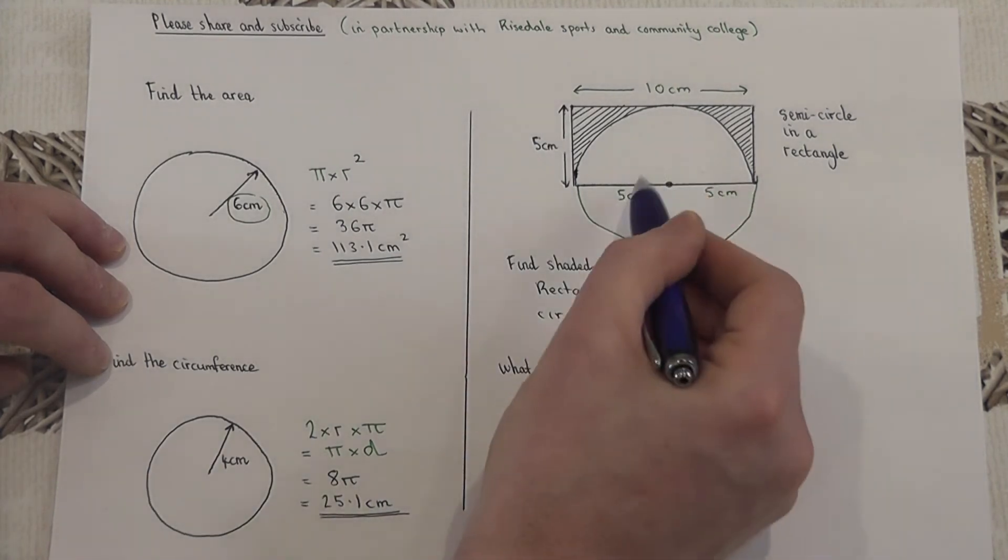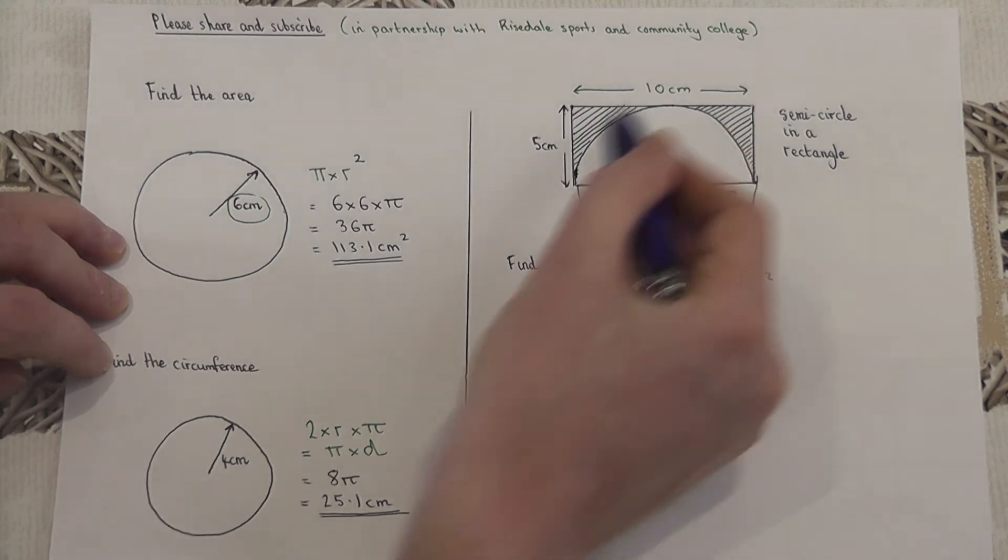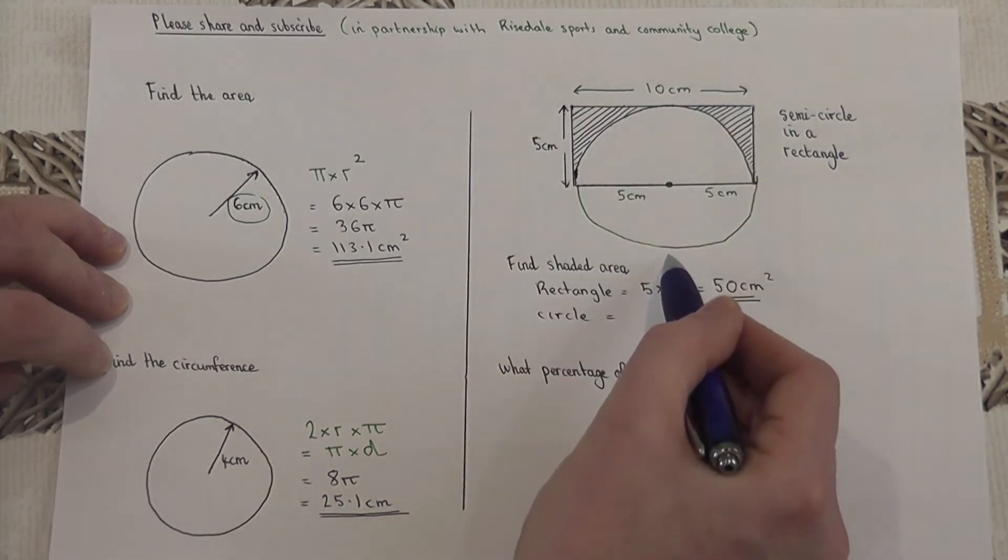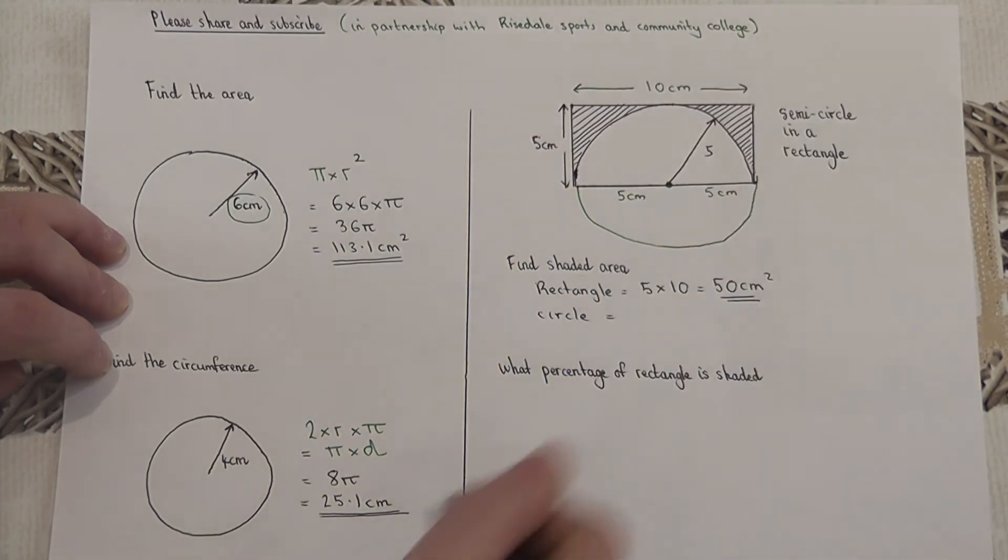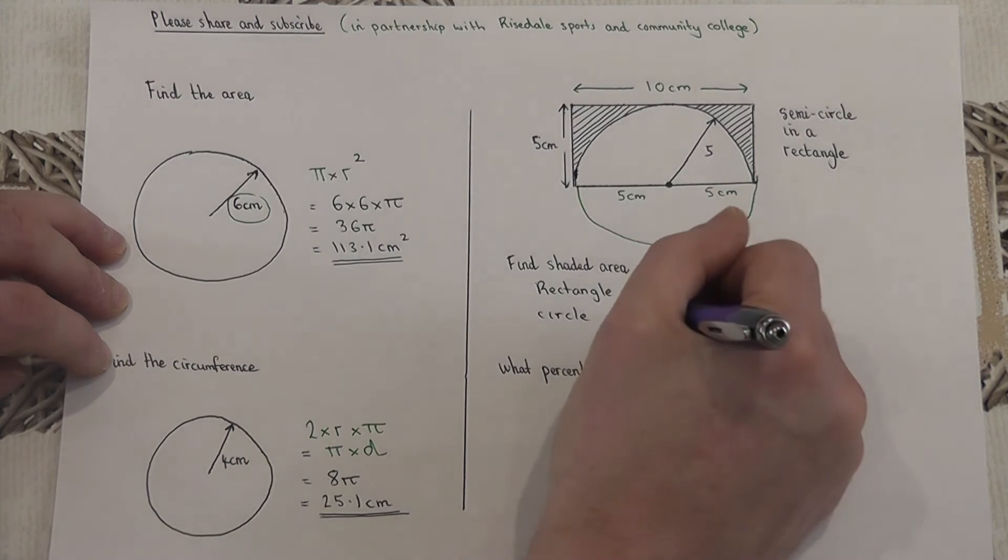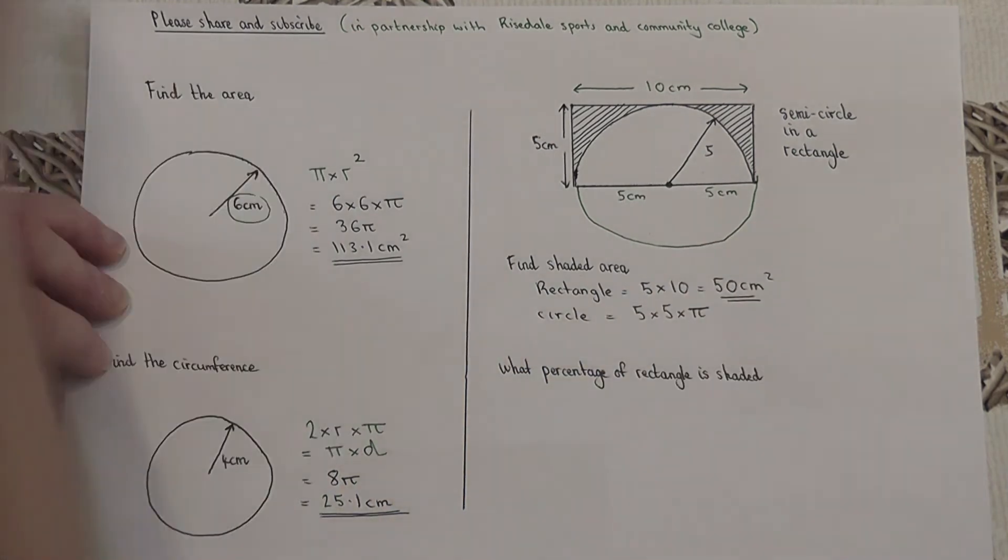However, we know that 5, the distance from the center to the outside, is this circle's radius. We know that this distance here has got to be 5. So I do the radius squared times by pi to get the entire circle.